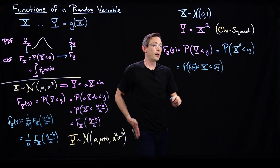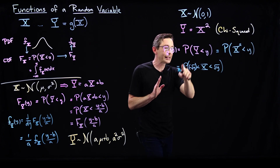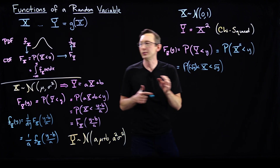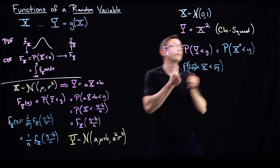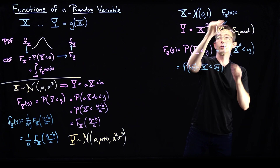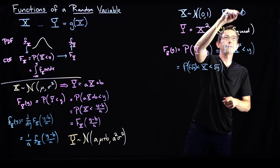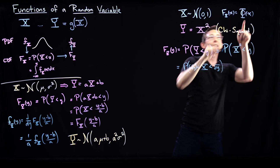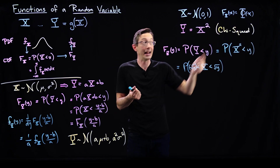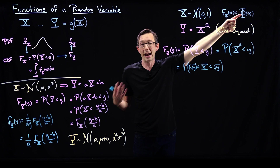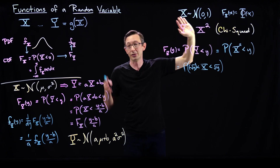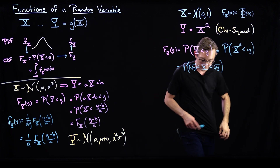The probability of x squared being less than y means that x has to be between plus or minus root y, because x is squared. And since x was a standard unit normal, I can actually write down the answer. We have defined the cumulative distribution function for a standard unit normal as this phi function. It has a special name because in the olden days you would look it up from a lookup table — this error function or sigmoidal function, which is the CDF of a standard unit normal.